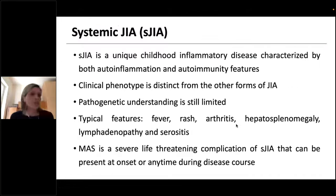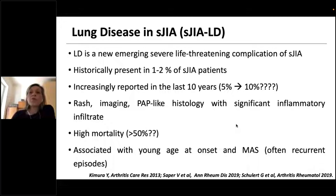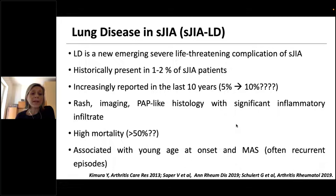Moving to systemic JIA: it is a unique childhood inflammatory disease with both auto-inflammation and autoimmunity features. Typical features include fever, rash, arthritis, hepatosplenomegaly, lymphadenopathy, and macrophage activation syndrome — a severe life-threatening complication. Lung disease is a new emerging severe complication of sJIA, historically present in 1-2% of patients, but increasingly reported in the last 10 years at 5-10%. This patient has typical rash, typical imaging, characteristic histology with significant inflammatory infiltrate, and mortality has been reported as high as 50%.